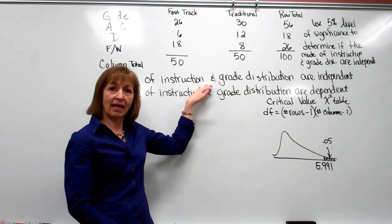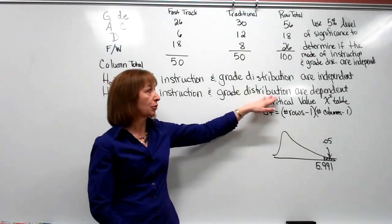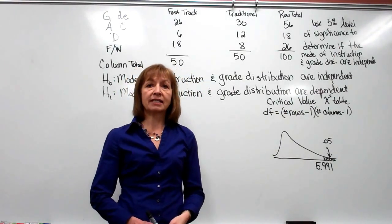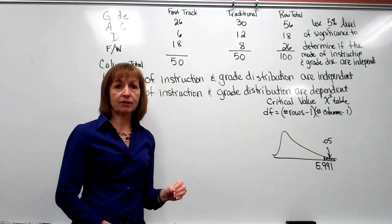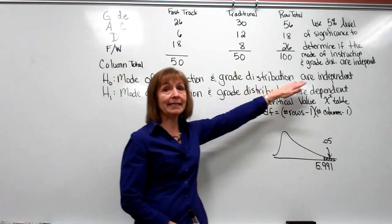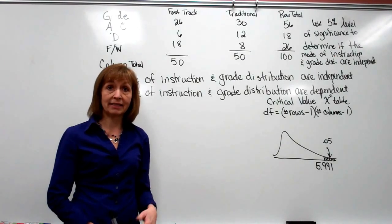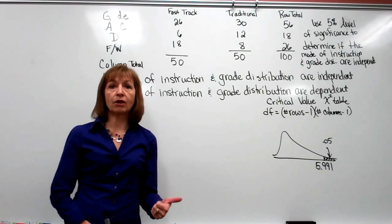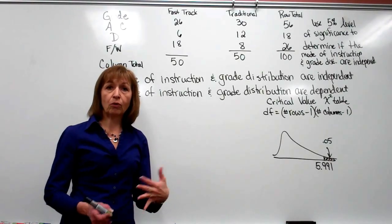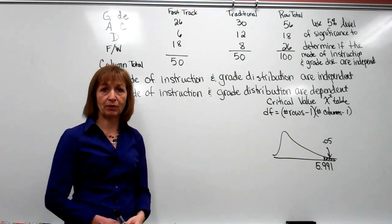If in our hypothesis test we reject that null, then our alternate will be that the mode of instruction and grade distribution are dependent. So whenever we're doing a hypothesis test for a test of independence, your null hypothesis will be that the two variables within the contingency table are independent, and your alternate hypothesis will be that those two variables are dependent. This is a case where the hypotheses are phrased as a statement rather than in terms of a parameter.